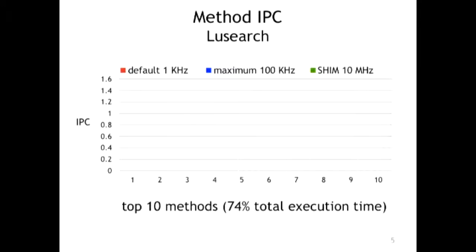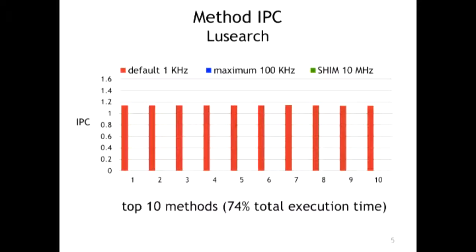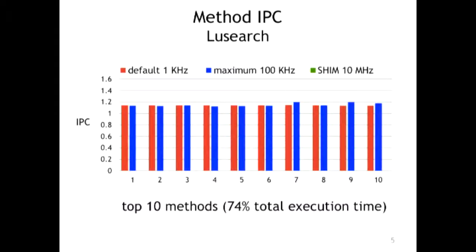With the profiler you ask for the top 10 methods that contribute most to execution time, and then ask for the IPC over those 10 methods. But the IPC tells you all of them are bad — it just gives average information, which doesn't help much. Even using the maximum sampling frequency with current profilers gives only slightly better results.